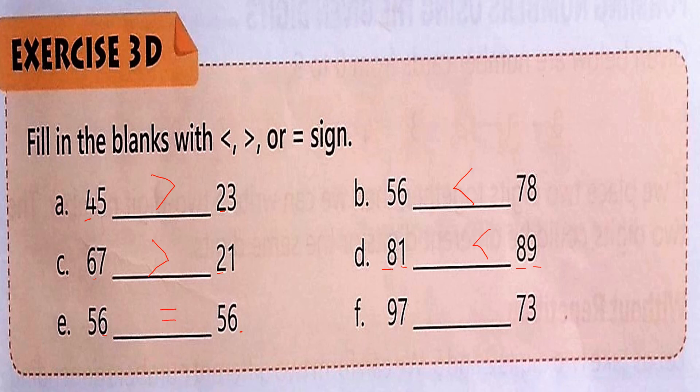Here, 97 and 73: the tens digits are 9 and 7, so 9 is bigger, meaning 97 is greater. For children, just keep in mind that the open mouth always faces towards the greater number. Do practice at home. Thank you everyone.